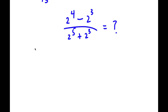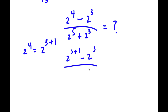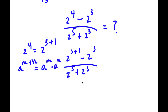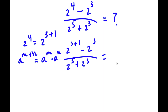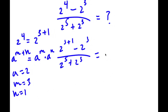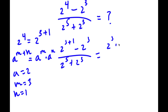Alright, so we have 2 to the power of 4 minus 2 to the power of 3 divided by 2 to the power of 5 plus 2 to the power of 3. Now, 2 to the power of 4 is the same thing as 2 to the power of 3 plus 1. So I have 2 to the power of 3 plus 1 minus 2 to the power of 3 over 2 to the power of 5 plus 2 to the power of 3. Using the property a to the power of m plus n equals a to the power of m times a to the power of n, we get 2 to the power of 3 times 2 to the power of 1 minus 2 to the power of 3 in the numerator.